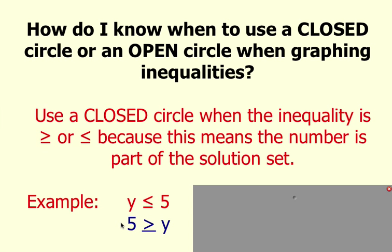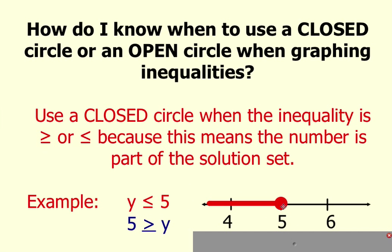When you graph this, you're going to use a closed circle, which looks like a circle that's filled in, and you're going to place it on the 5 on a number line. Remember, you're going to use a closed circle because the inequality is a greater than or equal to or less than or equal to.